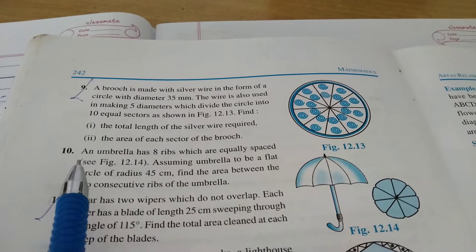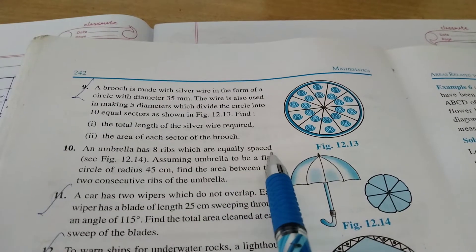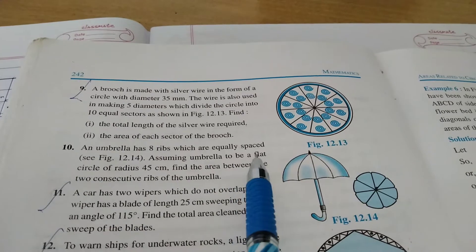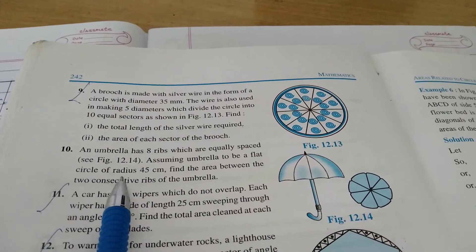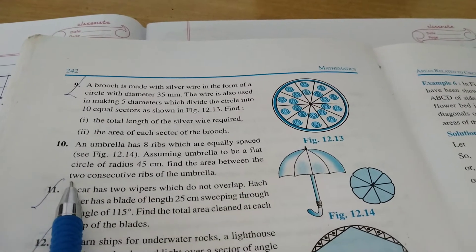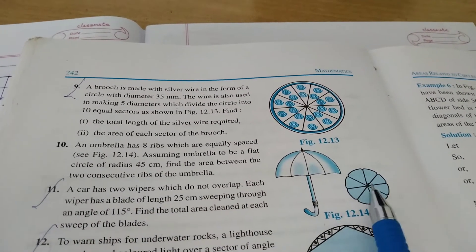Now let's do question number 10. Your question is: an umbrella has eight ribs which are equally spread, see figure 2.14. Assuming umbrella to be a flat circle of radius 45 centimeter, find area between two consecutive ribs of the umbrella. Okay, one, two, three, four, five, six, seven, eight.